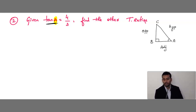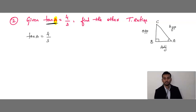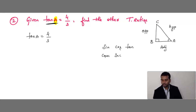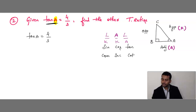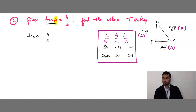Sin A = opposite/hypotenuse = 4/5. Cos A = adjacent/hypotenuse = 3/5. Tan A is already given as 4/3. For cosecant A = hypotenuse/opposite = 5/4. Secant A = hypotenuse/adjacent = 5/3. Cot A = adjacent/opposite = 3/4. We have found all the other trigonometric ratios.